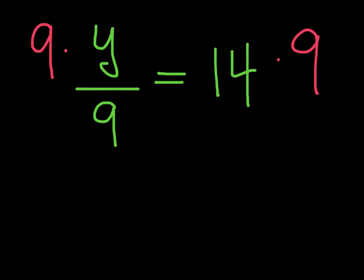On the left side of the equation, I now have y divided by 9 multiplied by 9. I can simplify this side of the equation and rewrite it as y equals 14 times 9.